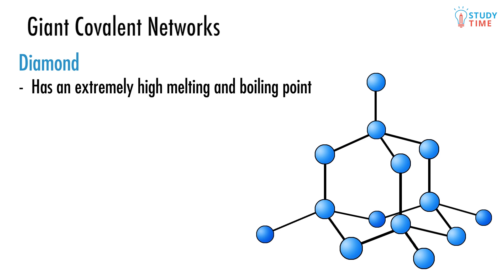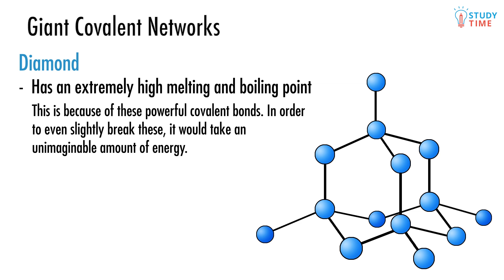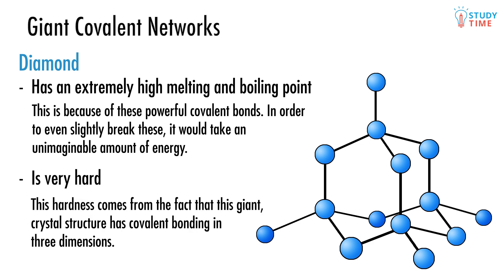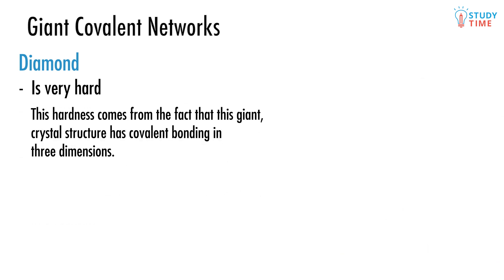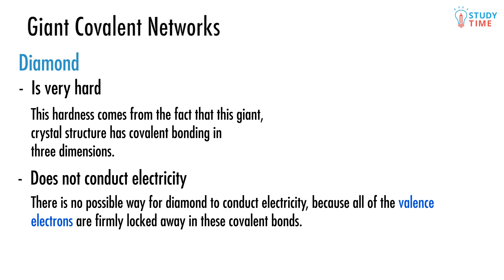Diamond has an extremely high melting and boiling point. This is simply because of these terribly powerful covalent bonds, which here are the black lines between the carbon atoms. In order to even slightly break these, it would take an unimaginable amount of energy. Diamond is very hard — this amazing hardness comes from the fact that this giant crystal structure has covalent bonding in three dimensions. Diamond does not conduct electricity because all of the valence electrons are firmly locked away in these covalent bonds. No free charge means no conducting electricity.